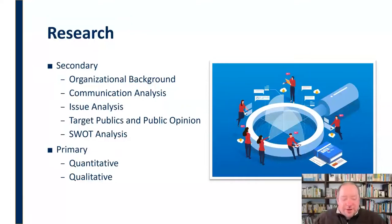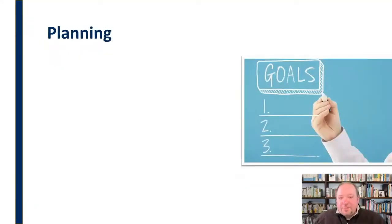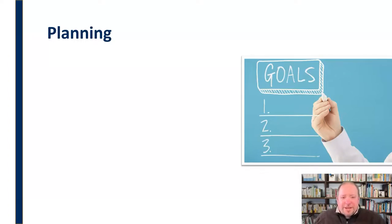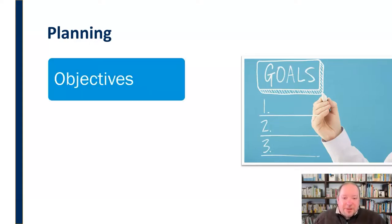Once you've done the research and have your background, then we can start thinking about Planning. What are our goals in this particular situation? We need to identify in general where we're headed. It doesn't do us much good to have this whole effort planned out if we don't know where we're going. We break planning down into a couple of different steps. First, we look at what our objectives are — what specifically are we moving toward and how do we know when we get there?